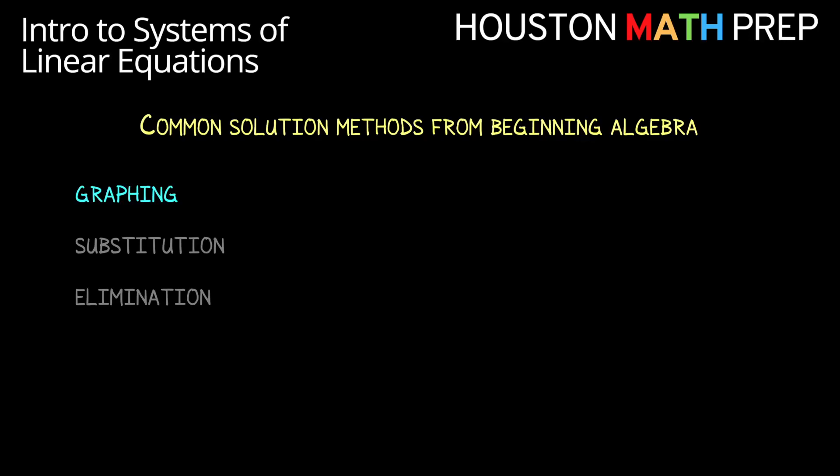So far in your math career you might have used a mixture of three main methods for solving linear systems. When doing these in an introductory algebra setting, the first one we've already mentioned here briefly is graphing. Again in two-dimensional space if we have two variables, the idea being if we graph one linear equation, then the other, we find the intersection point if there is one, then the intersection gives us the values for x1 and x2.